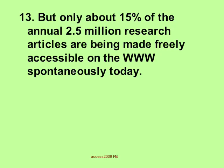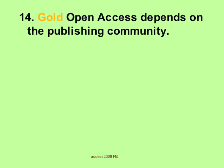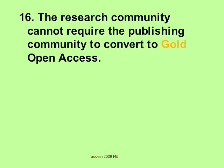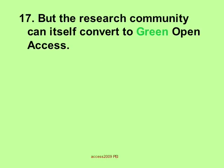But only about 15% of the annual 2.5 million research articles are being made freely accessible on the web spontaneously today by authors doing these keystrokes. Gold open access publishing depends on the publishing community, whereas green open access self-archiving depends only on the research community — this is something the research community is in a position to do for itself. The research community cannot require the publishing community to convert to gold open access publishing, but the research community can itself convert to green open access.